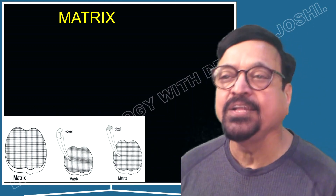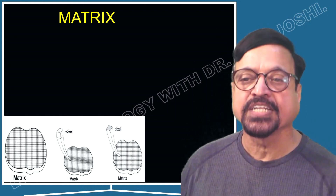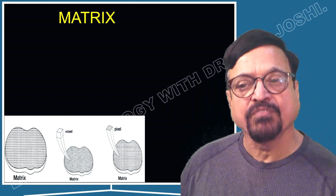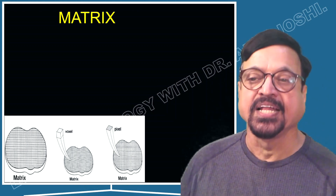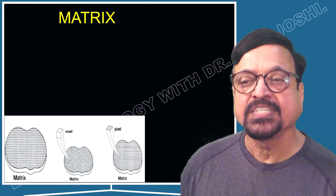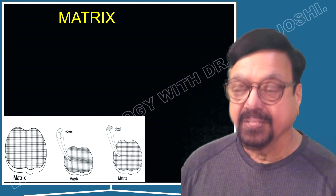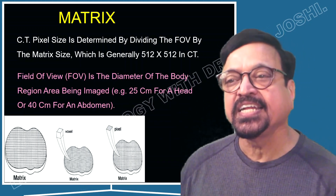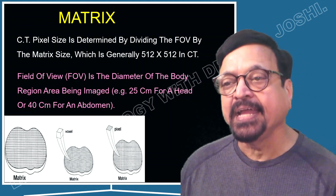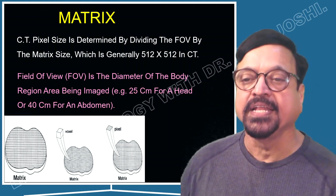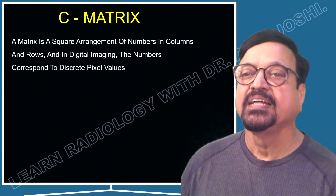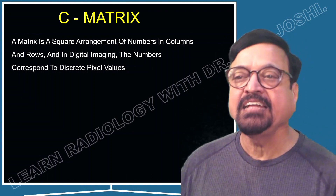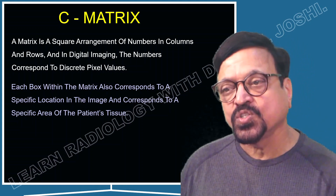Continuing with the matrix: looking at a cross-section of the body, you can see a matrix that is usually 512×512. This consists of voxels — remember, a voxel is a volume, it is three-dimensional. One element in the matrix is a voxel, while a pixel is the surface area of it — a two-dimensional thing. The CT pixel size is determined by dividing the FOV by the matrix size, which is generally 512×512. The FOV is the diameter of the body region being imaged — for example, 25 cm for the head or 40 cm for the abdomen. A matrix is a square arrangement of columns and rows.